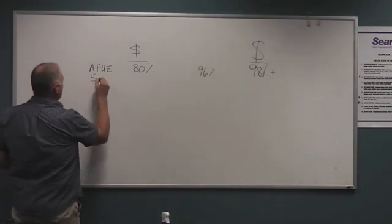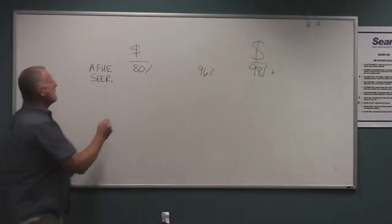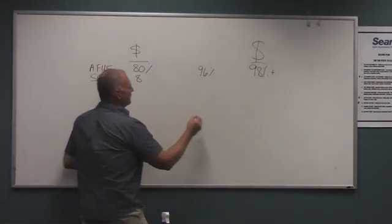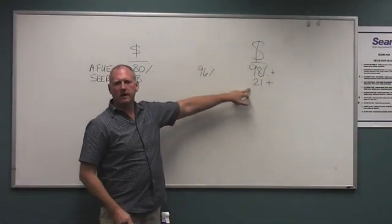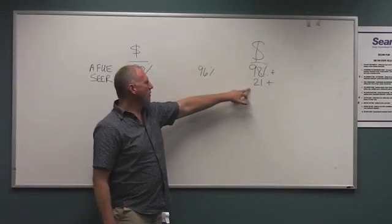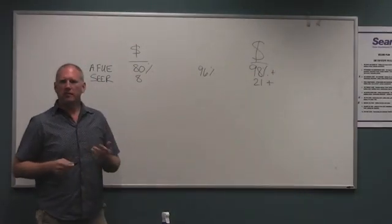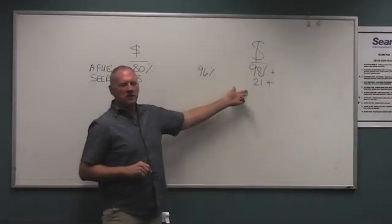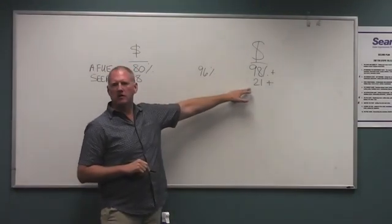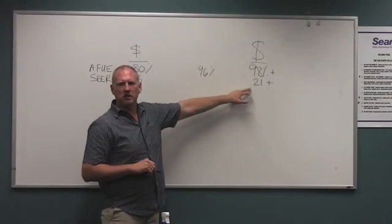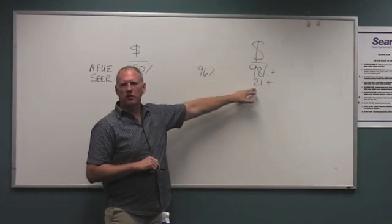In air conditioning, efficiency is measured by what we call the SEER rating, Seasonal Energy Efficiency Rating. That runs anywhere from 8 SEER to 21 plus SEER. If you live in Phoenix, Arizona, this is what we'll be talking about, a 21 plus SEER unit. But here in Utah, we don't use our air conditioner 10 months out of the year. We'll be using air conditioning 4 months out of the year, so you're never going to recoup your costs from this. It's a lot less expensive to run, but you may spend $15,000 putting one of these in your home.